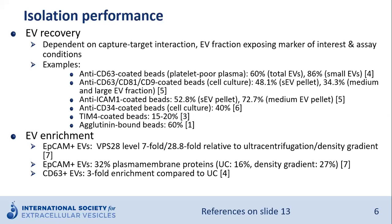Some examples of EV recovery: when using anti-CD63 coated beads in platelet-poor plasma, the authors found a 60% recovery for total EVs and 86% for small EVs. Using anti-CD63, anti-CD81, and anti-CD9 coated beads in cell culture, about 50% recovery was found for both small and large EVs. With anti-CD81 coated beads, about 50% recovery from the small EV pellet and about 70% from the medium EV pellet were obtained.